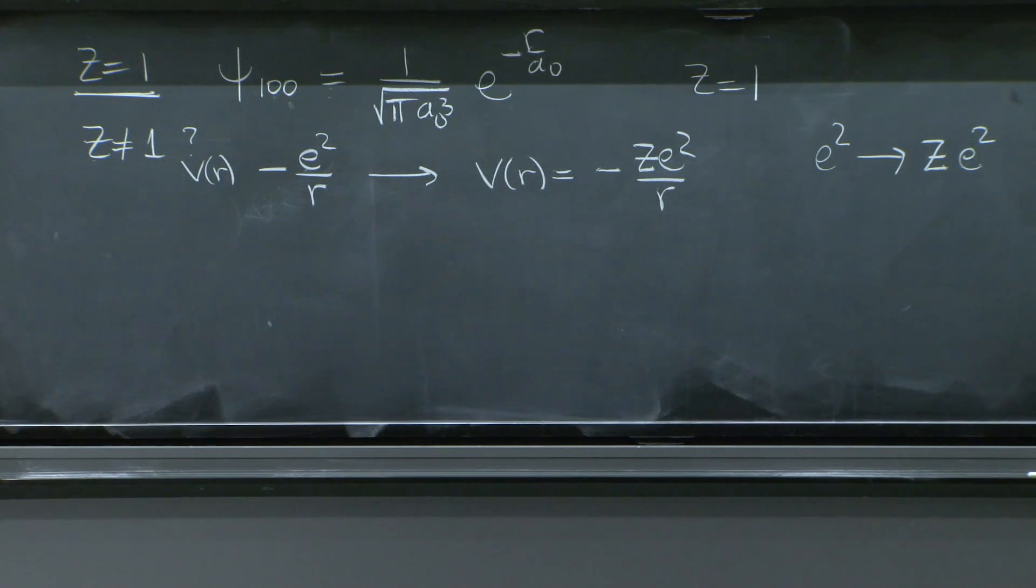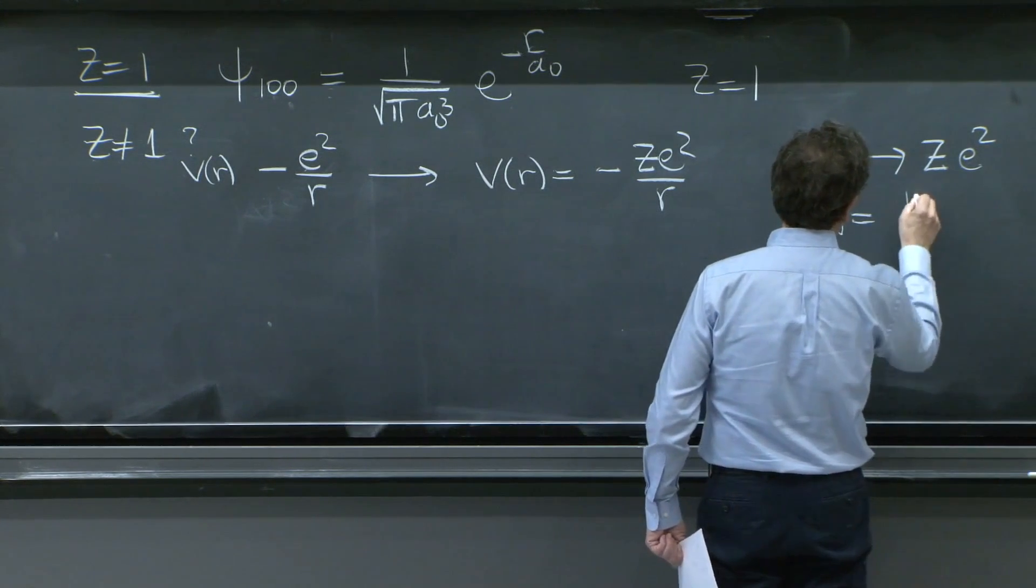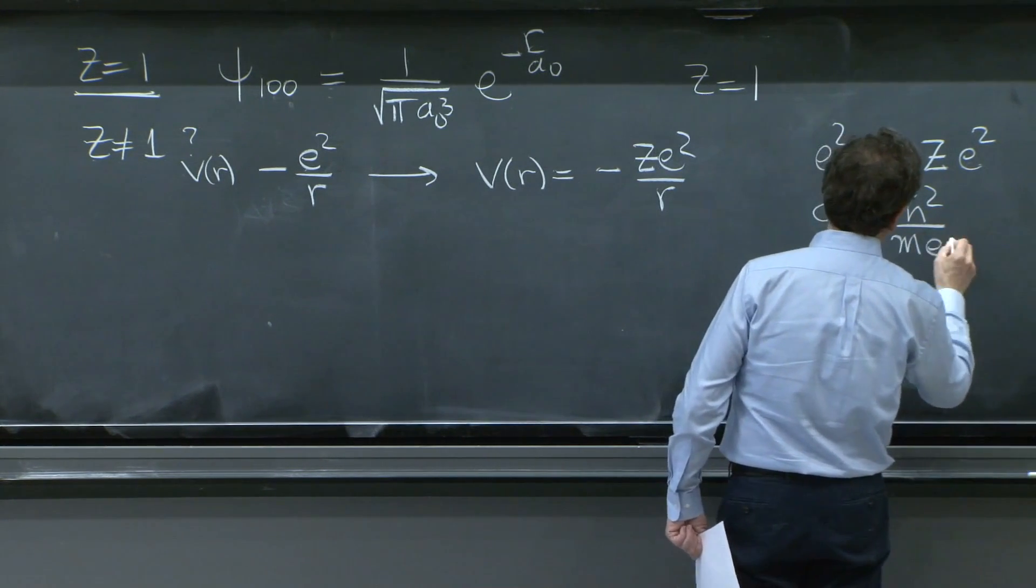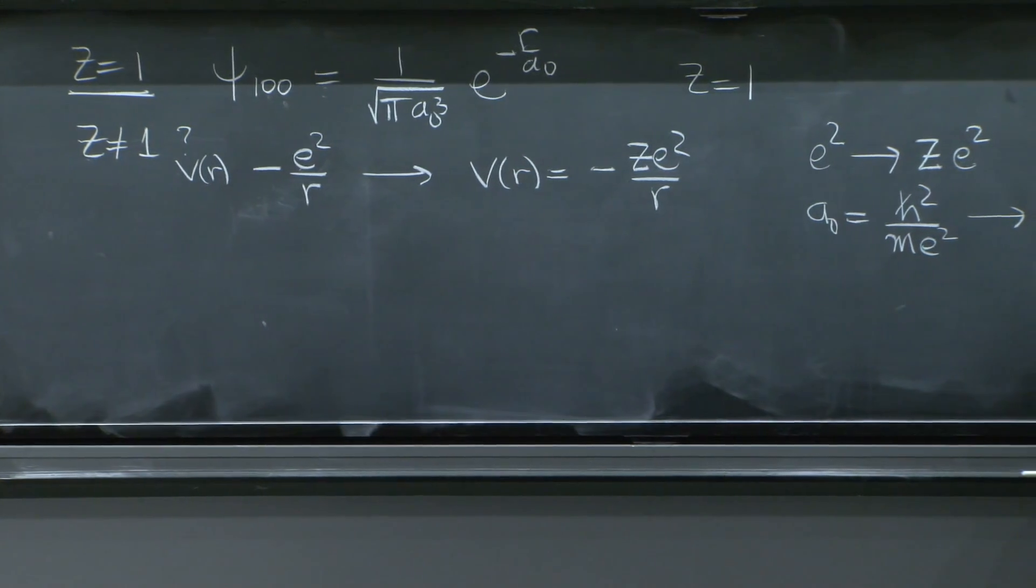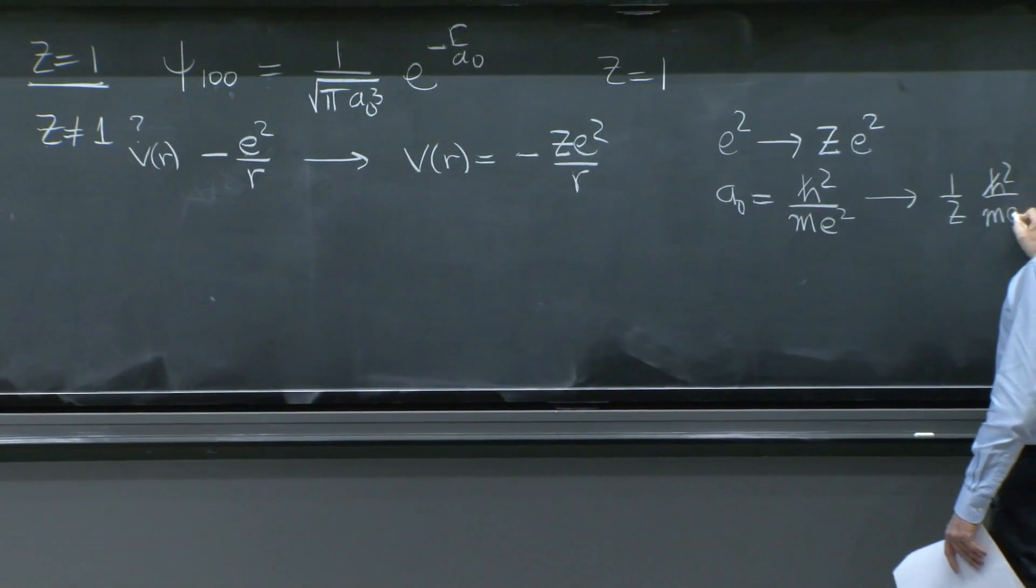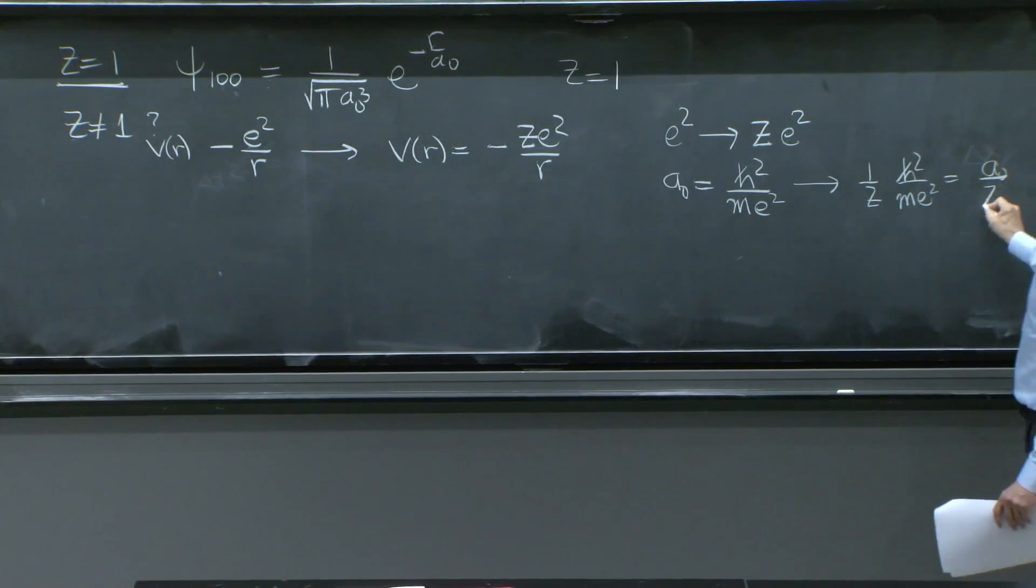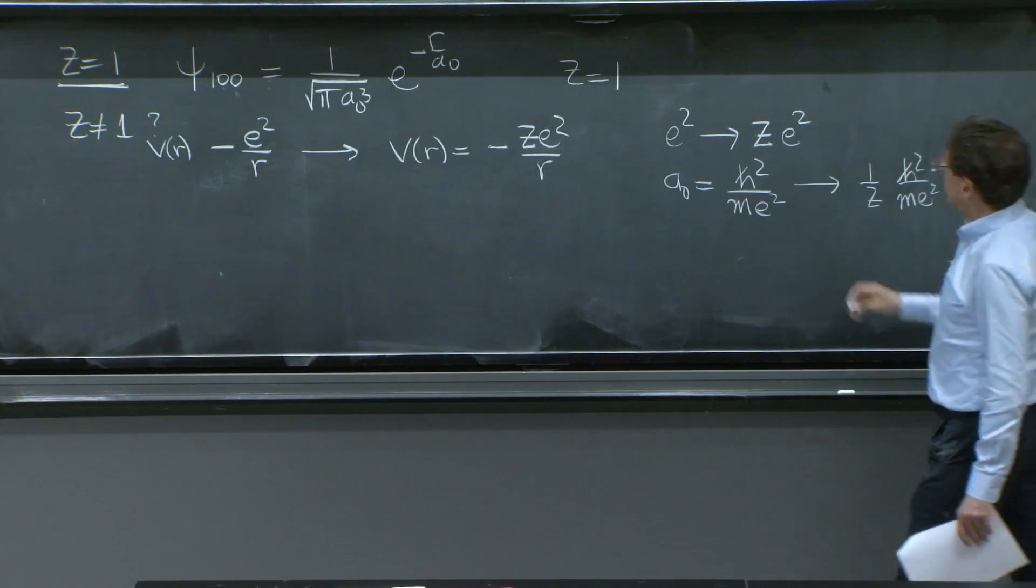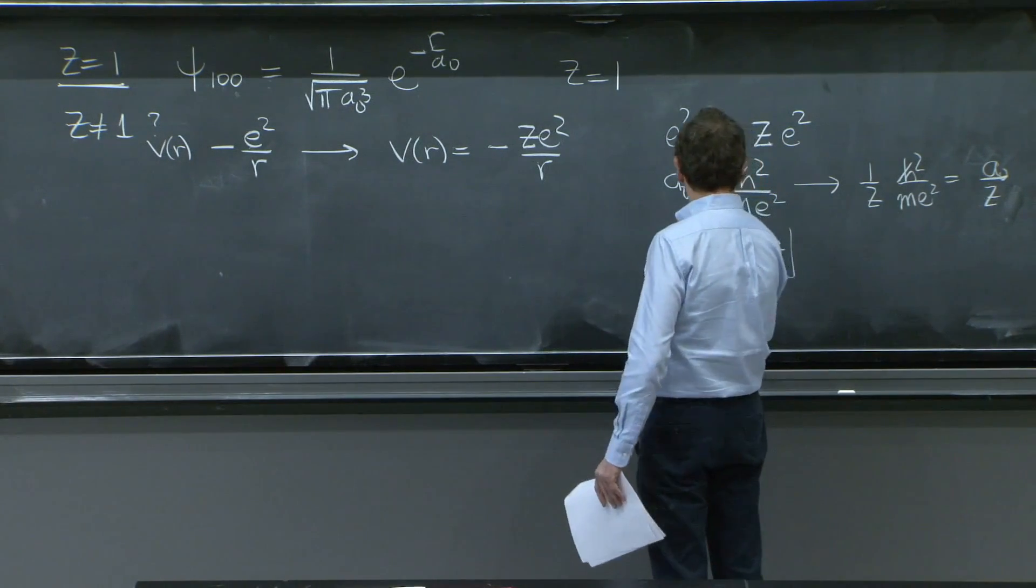And then you think of a naught. A naught was h squared over m e squared. We calculated that some time ago. And then if e squared goes to z e squared, this will go to 1 over z h squared over m e squared. So it will go to a naught over z. So you change a naught to a naught over z. And these are the two changes.